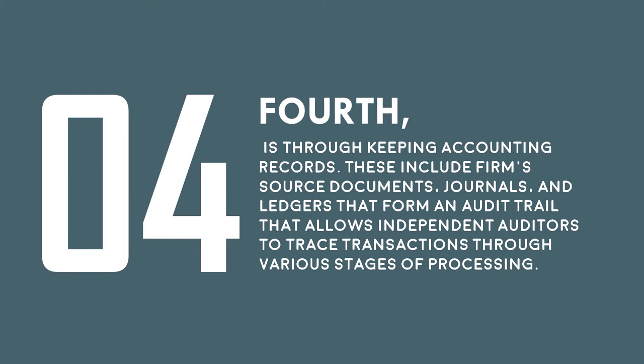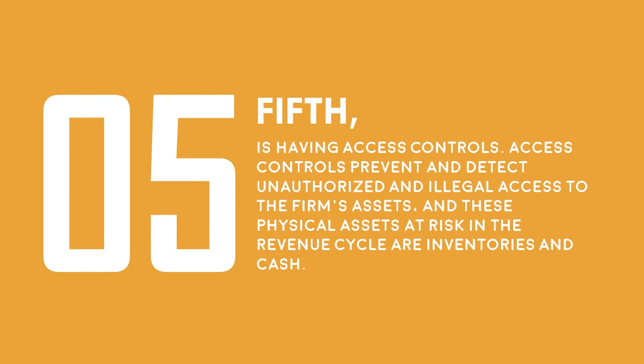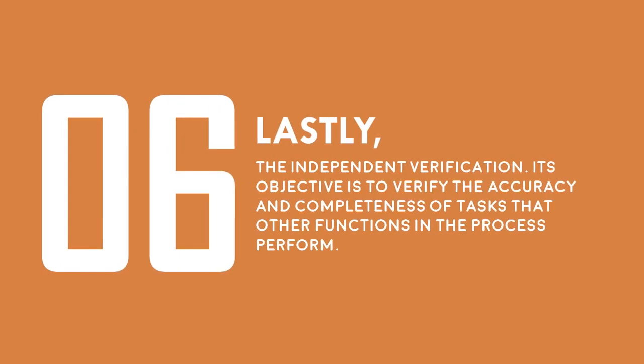Fourth is through keeping accounting records. These include the firm's source documents, journals, and ledgers that form an audit trail that allows independent auditors to trace transactions through various stages of processing. Fifth is having access controls, which prevent and detect unauthorized and illegal access to the firm's assets. The physical assets at risk in the revenue cycle are inventories and cash. Lastly, independent verification, whose objective is to verify the accuracy and completeness of tasks that the other functions in the process perform.